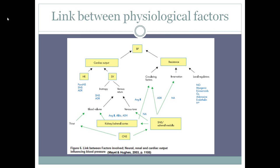Figure 6 shows the linkage between the factors discussed: cardiac output, the kidney, and the nervous system. The sympathetic nervous system deals with stroke volume, which feeds into cardiac output and influences blood pressure. The kidney also deals with blood volume and stroke volume, which then contributes to cardiac output and blood pressure.